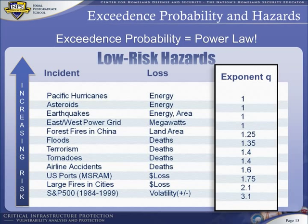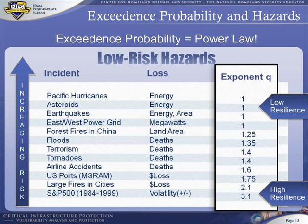The exceedance probability exponent Q is a measure of resilience. Large values of Q imply high resilience; low values of Q imply low resilience. Therefore, we will define Q as our measure of resilience. Systems with large values of Q are resilient — otherwise, they are not.